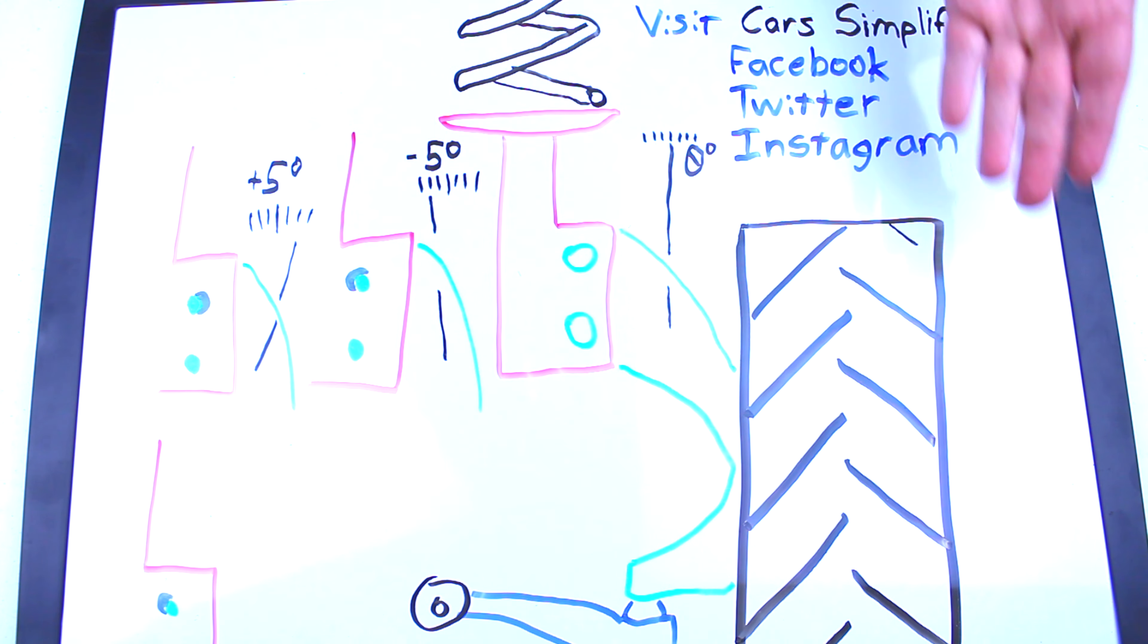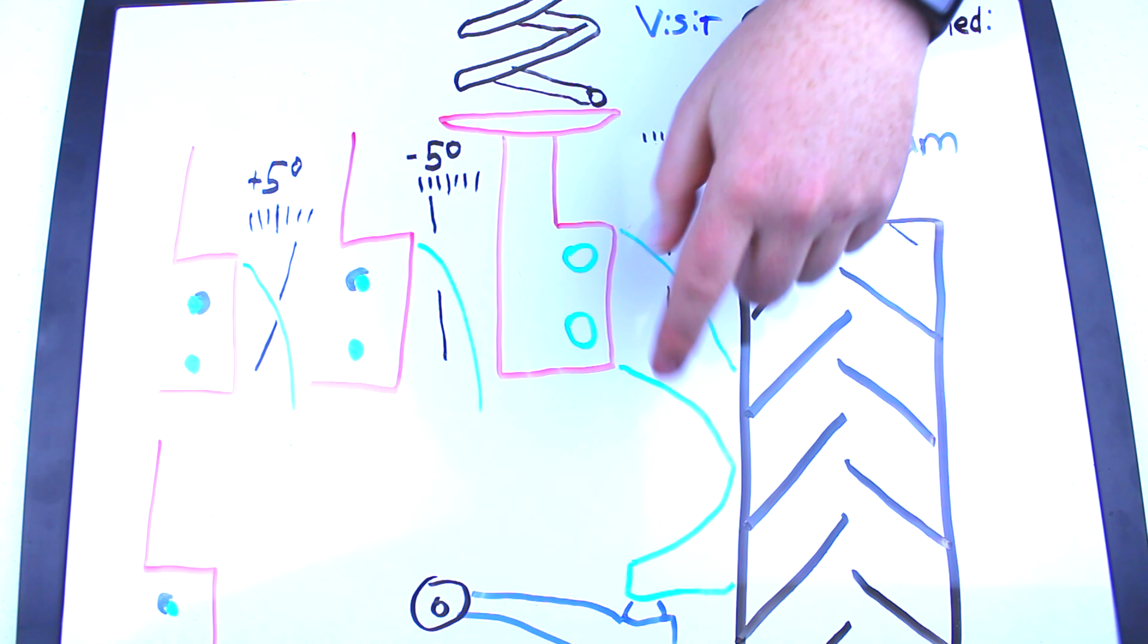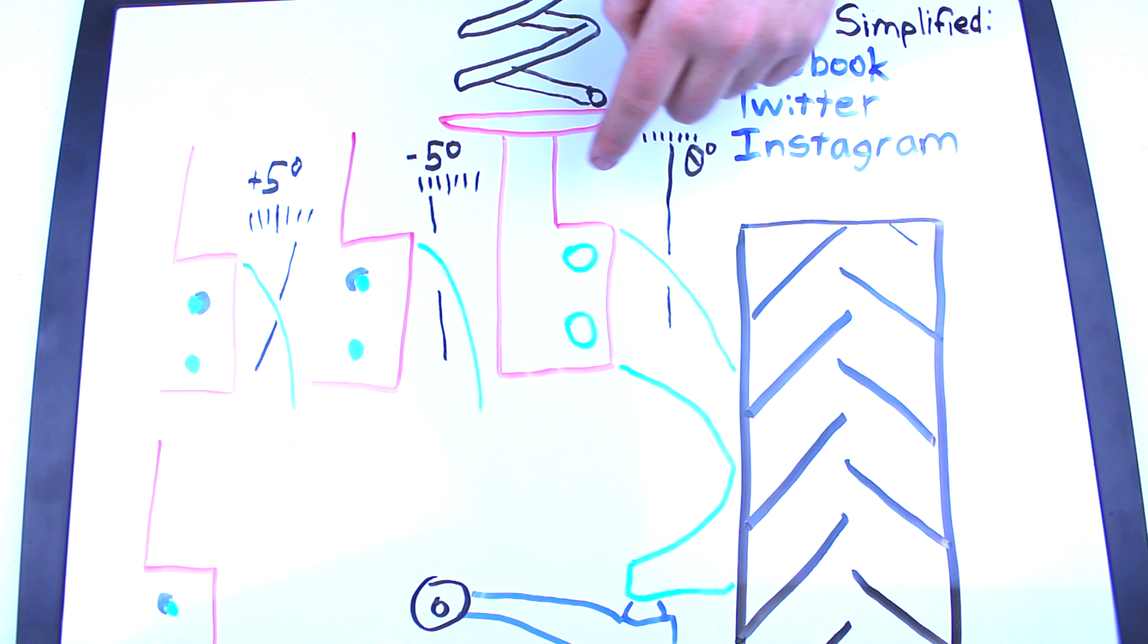For today's example I've drawn a very basic suspension system. We've got the tire, the steering knuckle, lower control arm, a strut, spring, and these are the bolts that hold the strut to the steering knuckle.